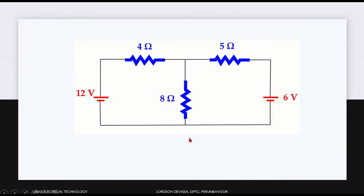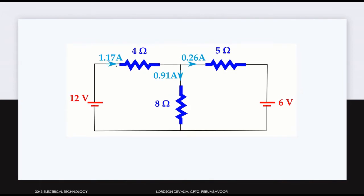Consider an electrical circuit with currents through a 4 ohm, 5 ohm, and 8 ohm resistor. In the previous classes, I derived these using loop analysis and node analysis. The current through the 4 ohm is 1.17 ampere, the current through the 5 ohm is 0.26 ampere, and the current through the 8 ohm is 0.91 ampere.